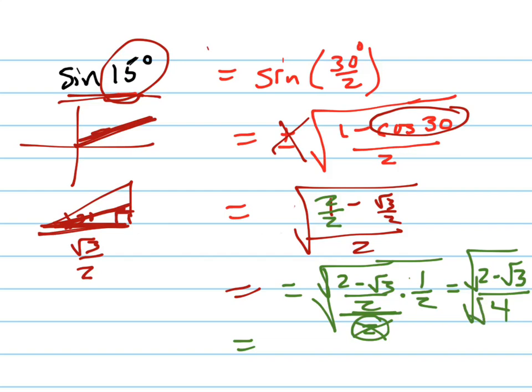But now I can split up the square root sign on the top and the bottom, because the square root of 4 is 2. So it's root 2 minus root 3, all over 2. And that's your answer.